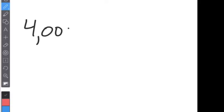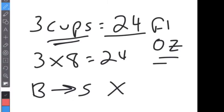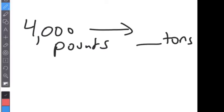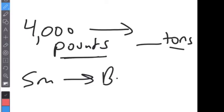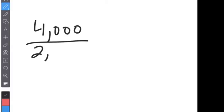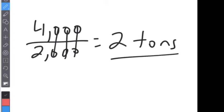Let's go reverse. Say you have 4,000 pounds and want to get to tons. Our conversion chart says 2,000 pounds equals one ton. This time we're going from small to big — pounds are smaller than tons — and when you go from small to big, you divide. So we take 4,000 divided by 2,000. As a fraction, that's 4,000 over 2,000; four divided by two is two, so the answer is two tons.